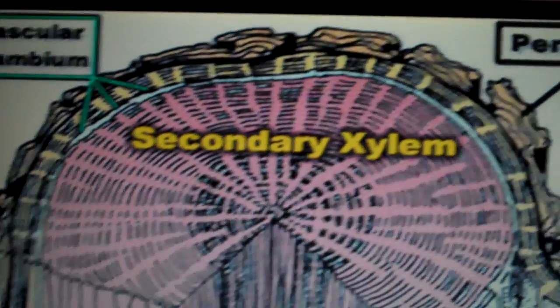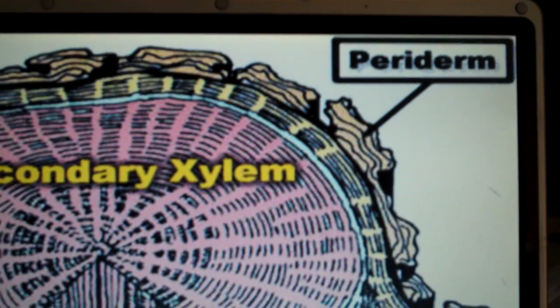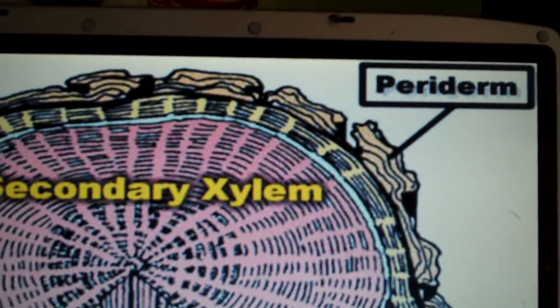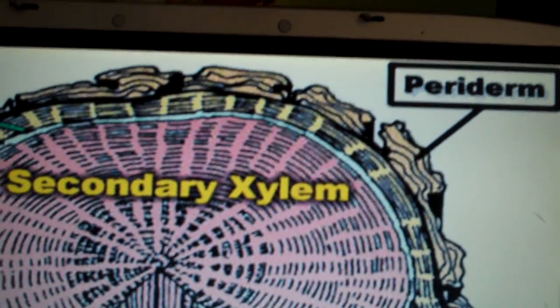In woody plants, the periderm is considered the dermal tissue which is part of the bark that you see on trees.